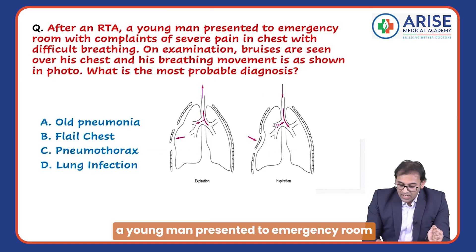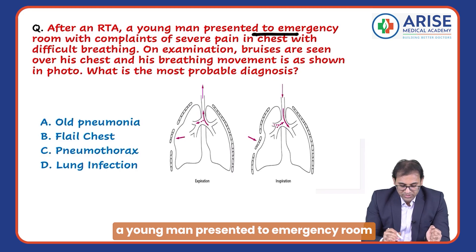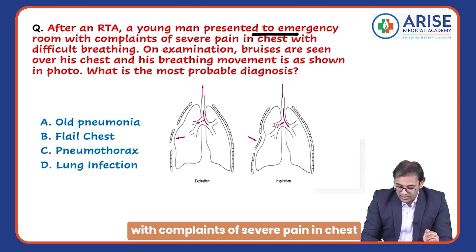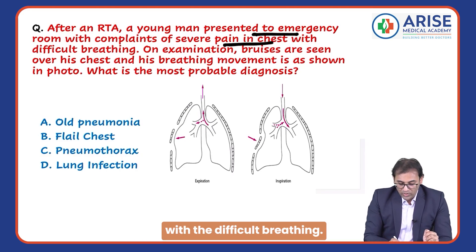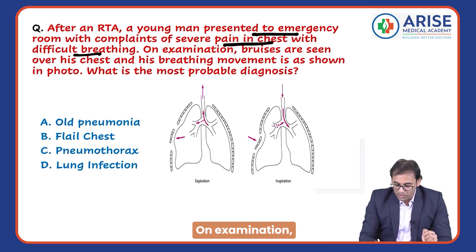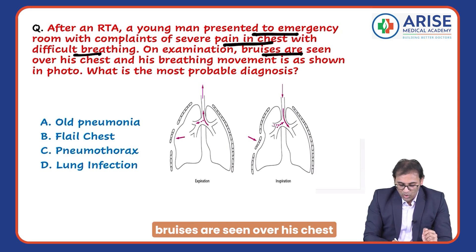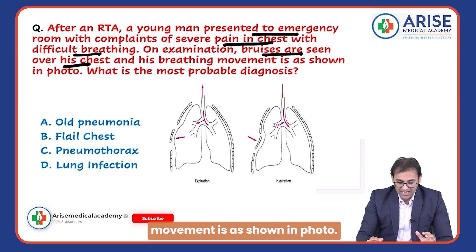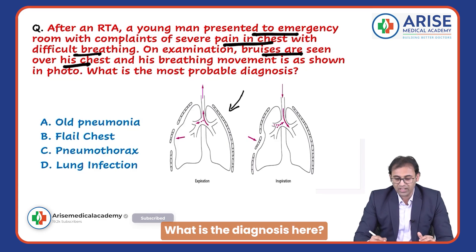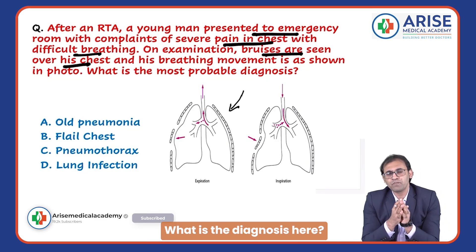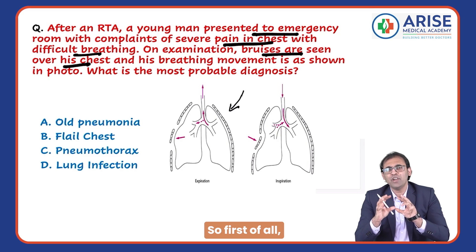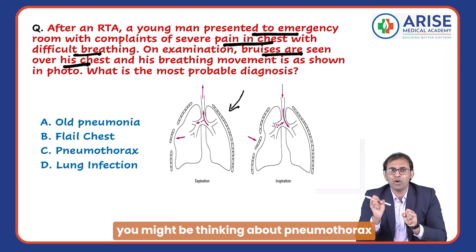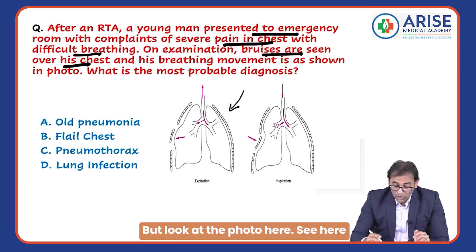After an RTA, a young man presented to the emergency room with complaints of severe pain in chest with difficulty breathing. On examination, bruises are seen over his chest and his breathing movement is as shown in the photo. What is the diagnosis here? You might be thinking about pneumothorax or something like that, but look at the photo.